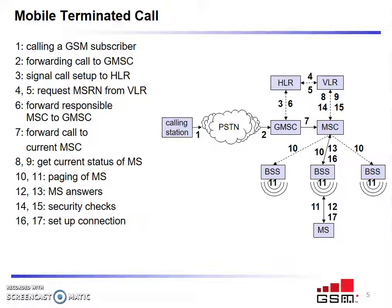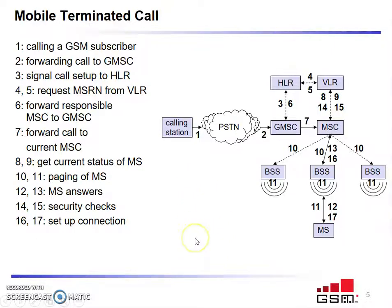The mobile station which has to receive the call will now respond. The second BSS has the mobile unit that needs to get the information. That unit receives the information and responds back. Once the response is received from the MS, that information is returned by the second BSS to the MSC, and the connection is set up. This is how a calling station communicates with the mobile station — this is a mobile terminated call.